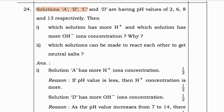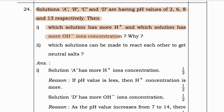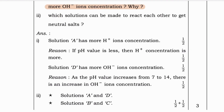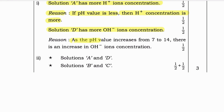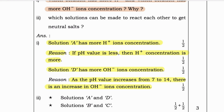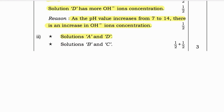Next question: Solutions A, B, C, and D have pH values of 2, 6, 8, and 13 respectively. Which solution has more H⁺ ions and which has more OH⁻ ions? Solution A has more H⁺ ions because if the pH value is less, H⁺ concentration is more. Solution D has more OH⁻ ions because as pH increases from 7 to 14, OH⁻ concentration increases. Which solutions can react with each other to give neutral salts? Solution A and D, and solution B and C.